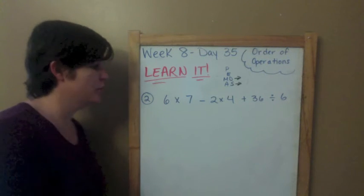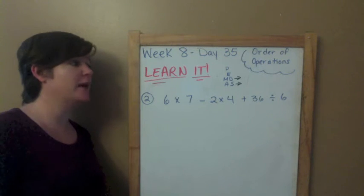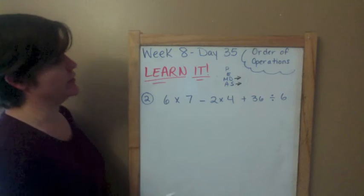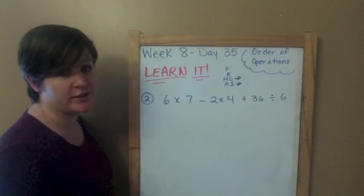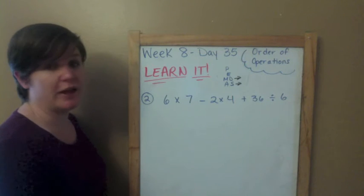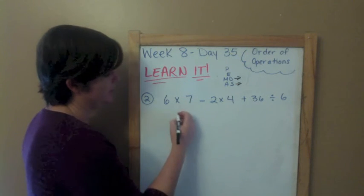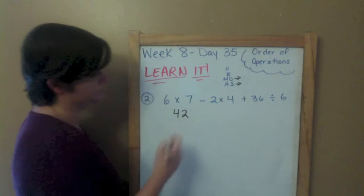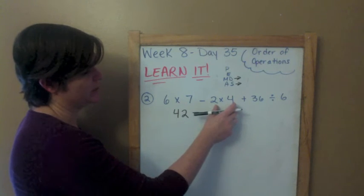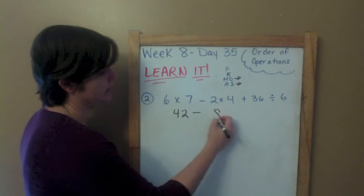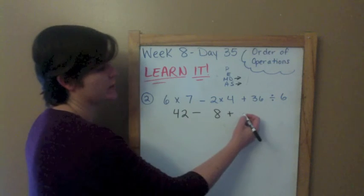Number 2. We've got 6 times 7 minus 2 times 4 plus 36 divided by 6. Let's use our PEMDAS. P — do I have any parentheses? No, so I move on. No exponents either. So now I'm multiplying or dividing from left to right. Starting from the left: 6 times 7 is 42. Then 2 times 4 is 8. And 36 divided by 6 is 6.